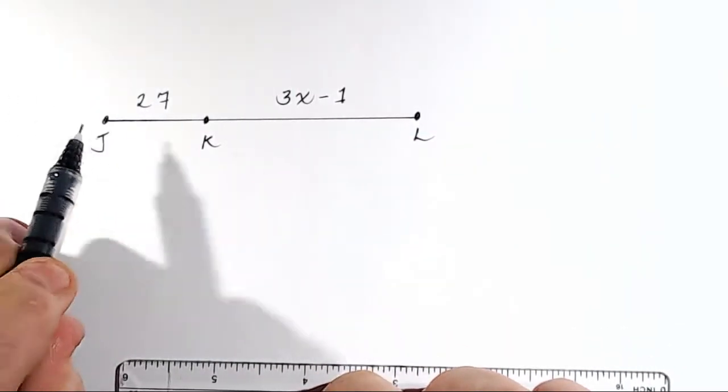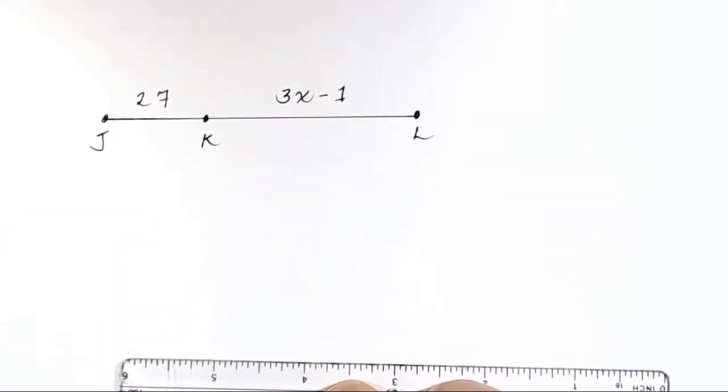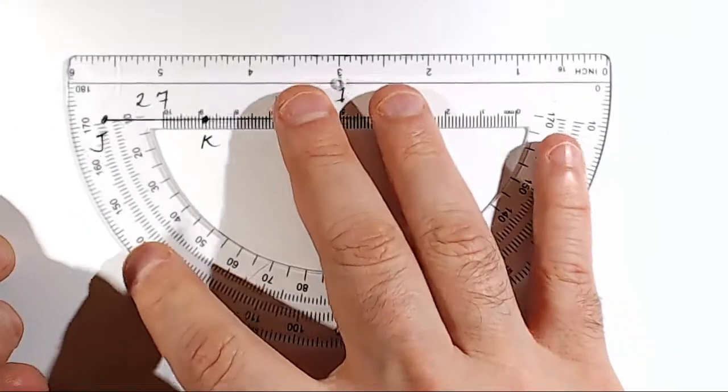It says that the distance from J all the way to L is equal to 5X plus 2. All right, so we'll go ahead and write that somewhere. I'll write it up here.